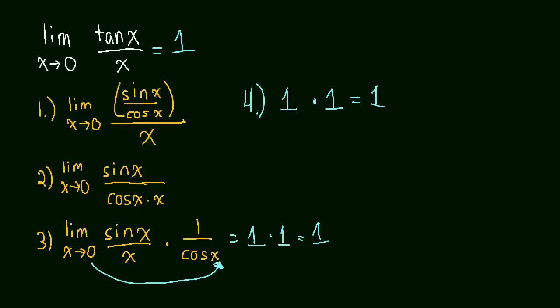So the limit as x approaches zero of tan x over x equals 1. And now you know.